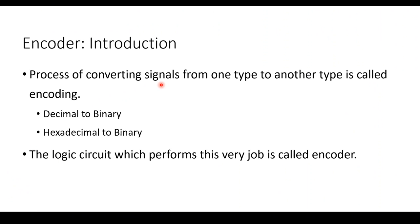The process of converting signals from one type to another type is called encoding. You have decimal to binary encoder as well as hexadecimal to binary encoder — converting numbers from other formats to binary. The logical circuit which performs this job is called an encoder.